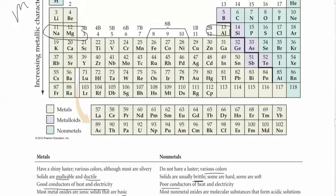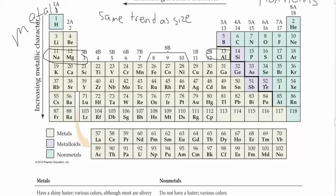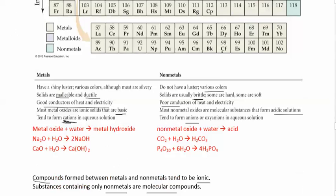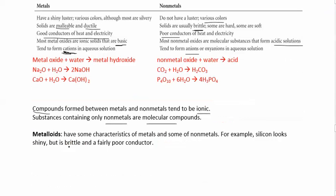Metalloids. There's the ones that are on the stairs here. These purple ones. Tend to have properties. Some properties that are similar to metals. Some properties that are similar to non-metals. So for example, silicon is shiny like a metal. But it's brittle and it's a pretty poor conductor. Like a non-metal.